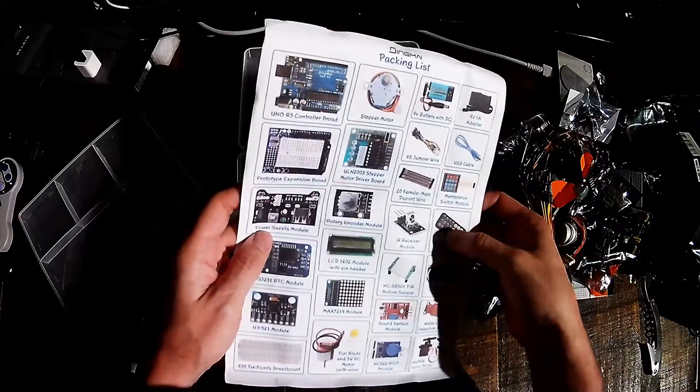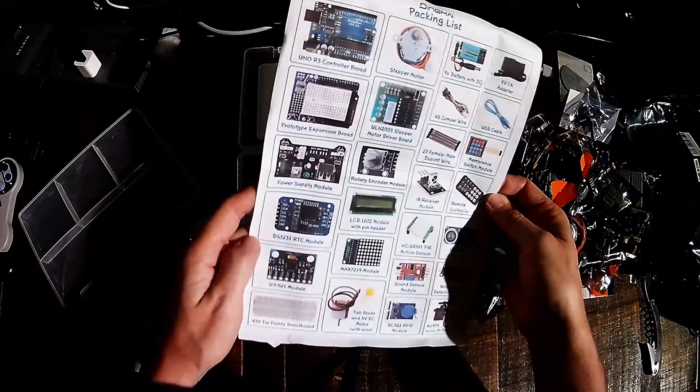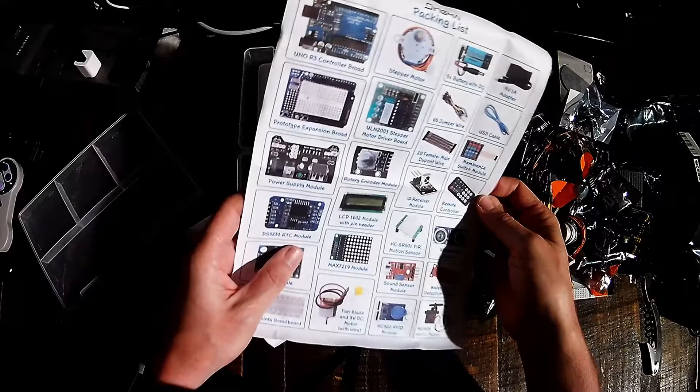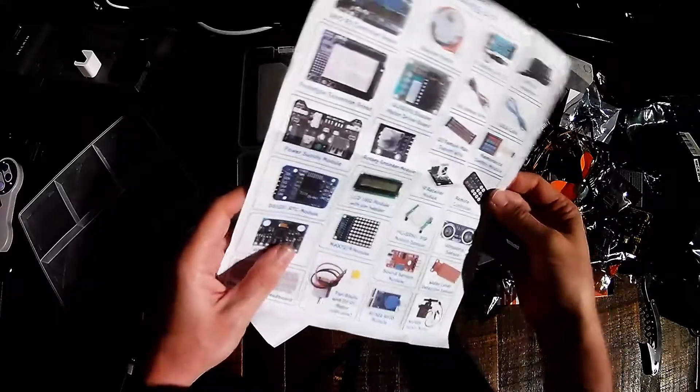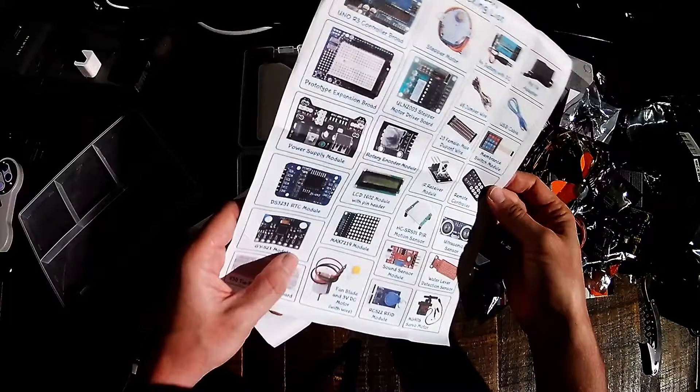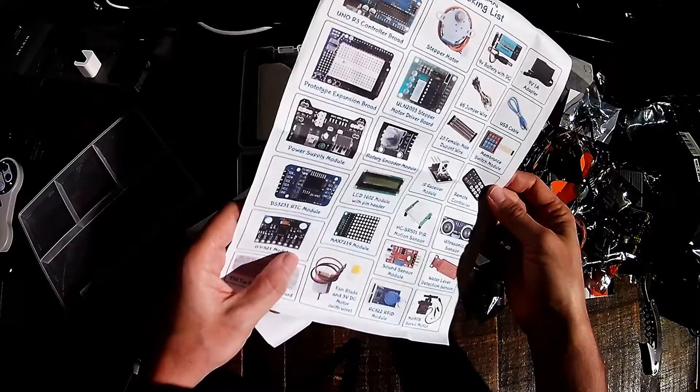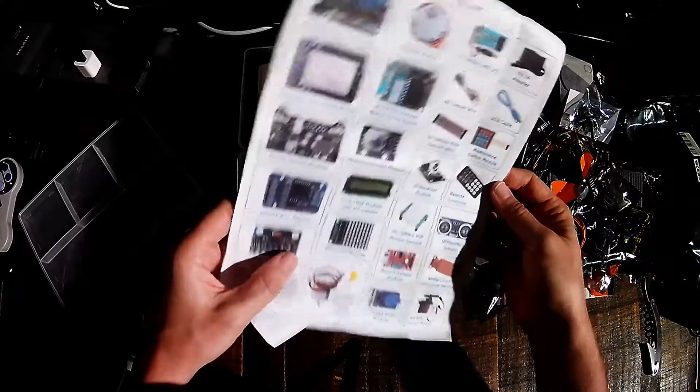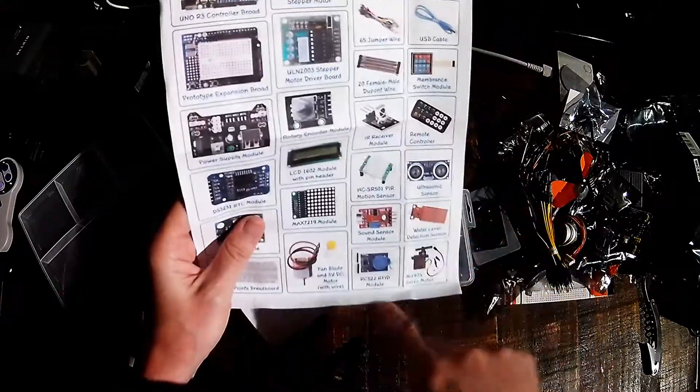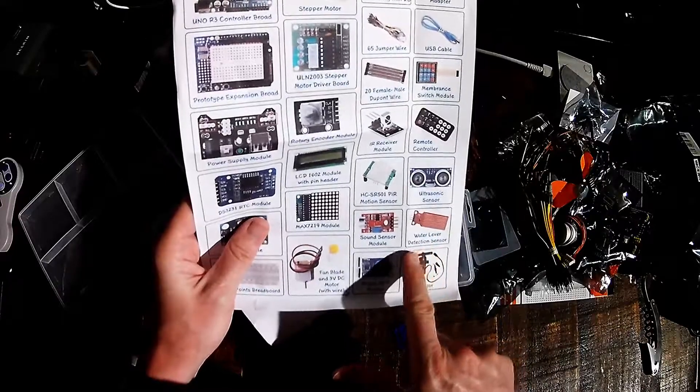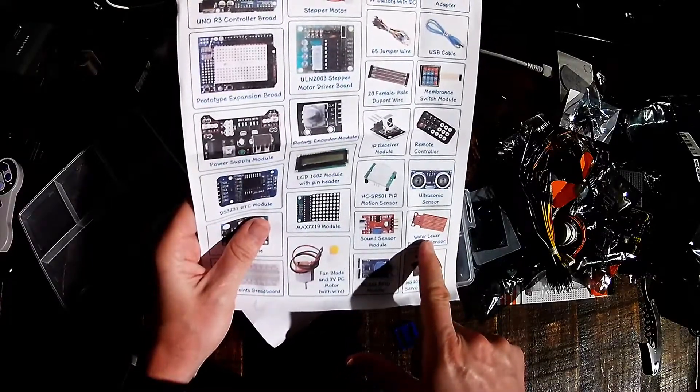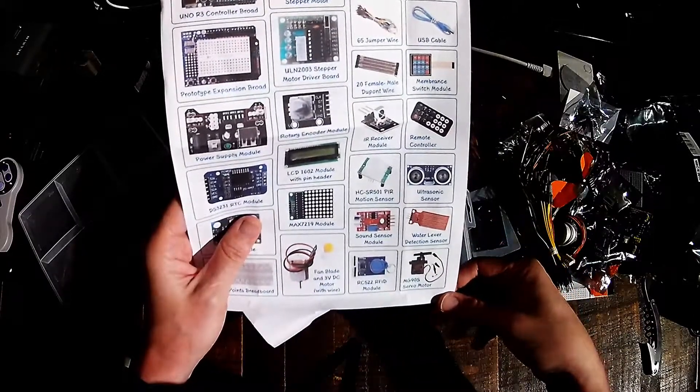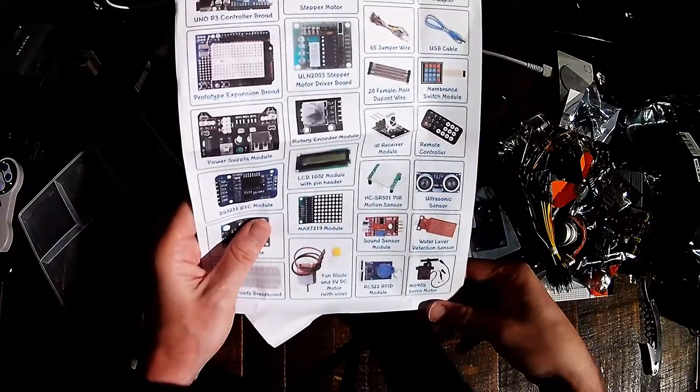Rotary encoder. IR receiver. Remote controller. RTC module. LCD. HCSR501. Ultrasonic sensor. GY521 module. MAC7219 module. Sound sensor. Water lever. Lever detection sensor. You could use that to make an automatic device to fill up your batch water bowl. Or even a pool to keep the water at a set level.